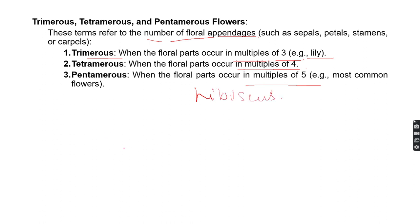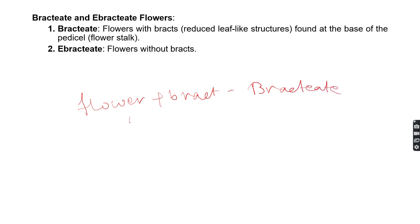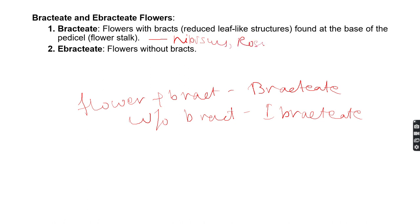Next, flowers are categorized by the presence or absence of bracts. Flowers with bracts are known as bracteate flowers, and flowers without bracts are called ebracteate flowers. Examples of bracteate flowers include hibiscus and rose. Examples of ebracteate flowers include touch-me-not and mustard.